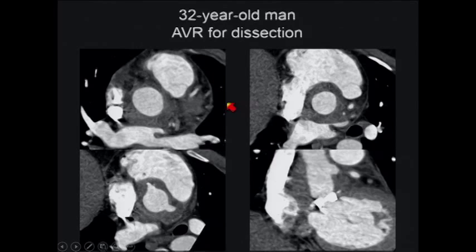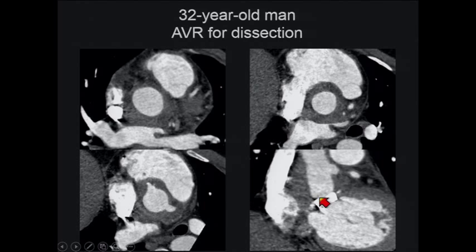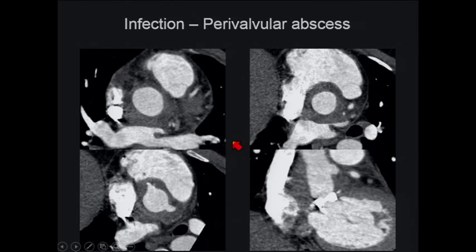Another patient with infection — not endocarditis — who had a valve and ascending repair for dissection. We see a rind of phlegmon, intermediate attenuation fluid around the aorta. Our surgeons really appreciate this study — the patient was evaluated with echo first, which showed a possible fluid collection, but CT shows them the full extent of the abnormality, whether there's a pseudoaneurysm, and if the coronary ostia are involved. This is a paravalvular abscess, treated with antibiotics for several months before re-repair.